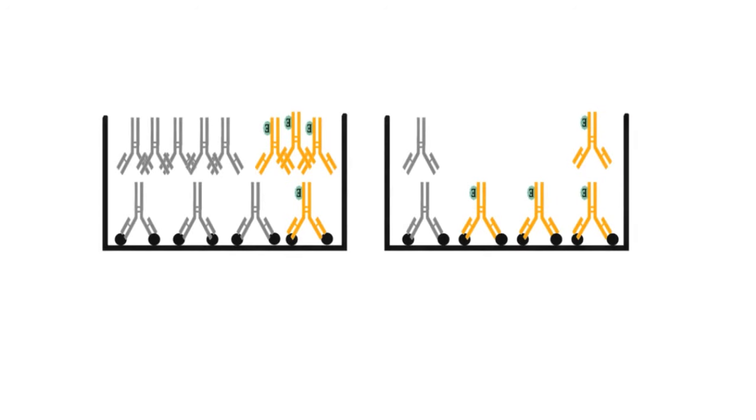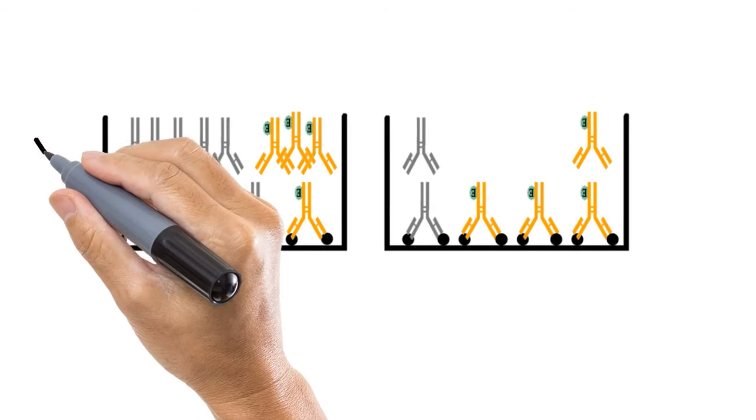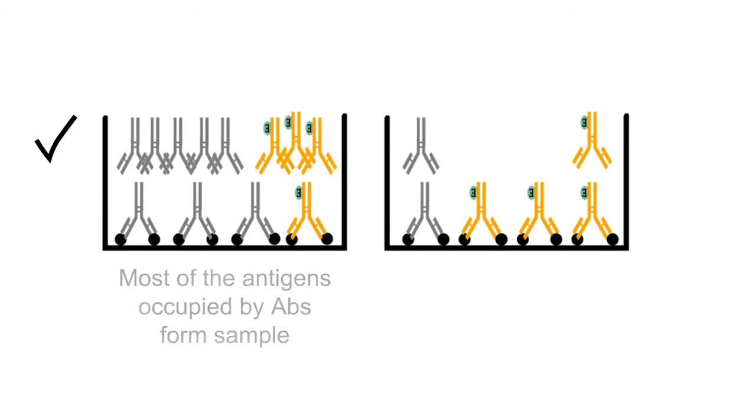If the concentration of antibodies from the sample is more than enzyme-linked antibodies, as in this case, these antibodies will occupy most of the antigens of the well. On the other hand, very few enzyme-linked antibodies will bind to the antigens.